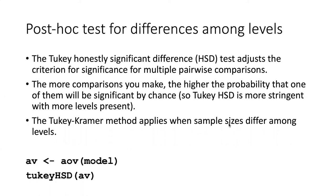If you perform an ANOVA and find that there are differences among the levels or groups in your experiment, a natural follow-up question is whether there are differences between specific groups. In the cockroach electroretinogram experiment, for example, you might want to know whether the roach eye responds differently to red and blue light, red and green light, or green and blue light.